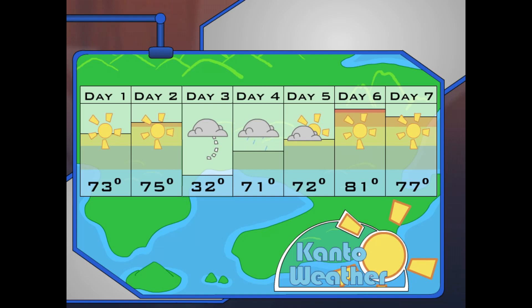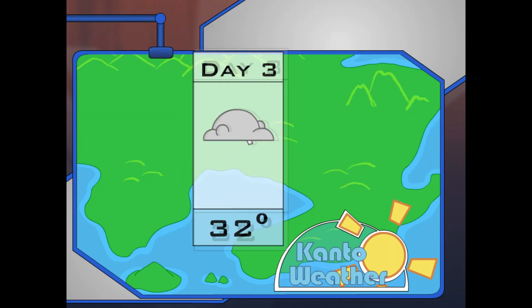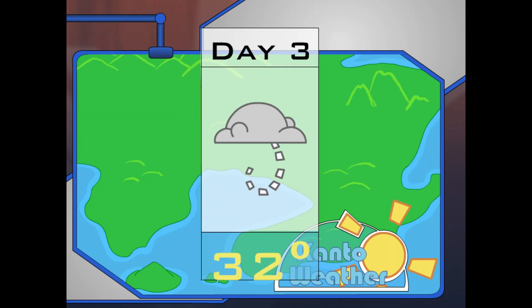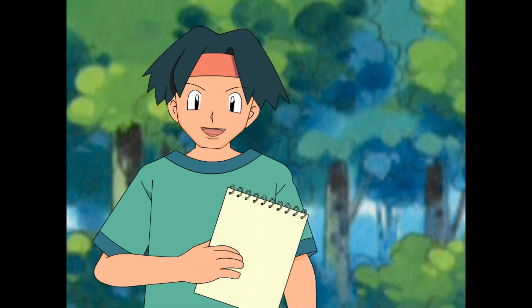The weather was very weird here last week. Check the weather map. The weather in this area of Kanto is usually around 70 degrees. But do you see the day that looks really different? Click on it! Can you believe it? Day 3, it was 32 degrees — that was a cold snap. I've got a hypothesis: the sudden cold weather on day 3 caused the apples in this area to turn sour.